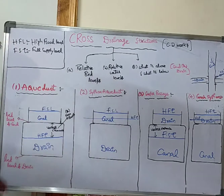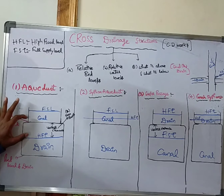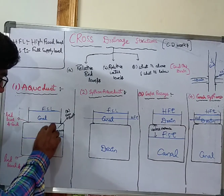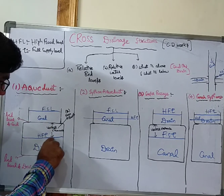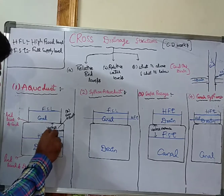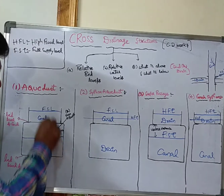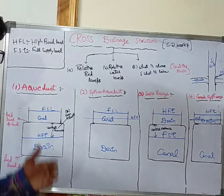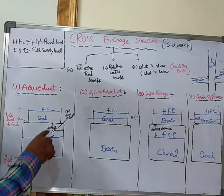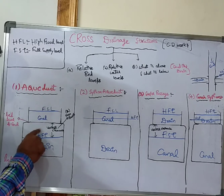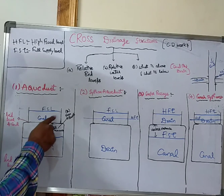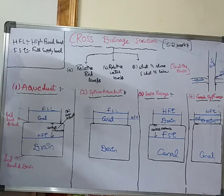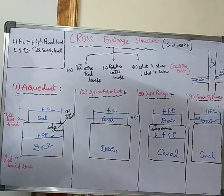In an Aqueduct, there is a vertical clearance or freeboard between the canal bed level and the High Flood Level of the drain. Due to this freeboard, the canal and drain are both subjected to atmospheric pressure. This vertical space between the HFL of the drain and the canal bed level confirms it as an Aqueduct structure.